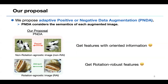Therefore, we proposed a new augmentation strategy, adaptive positive or negative data augmentation (PNDA), which takes into account the meaning of each image. For non-rotation agnostic images (non-RAI), the rotated images are treated as negatives, and for rotation agnostic images (RAI), the rotated images are treated as positives. This allows us to obtain the appropriate features for each image.